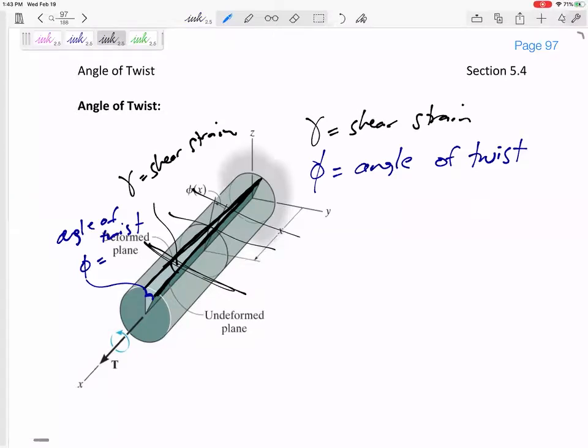So angle of twist is different at each length, whereas the shear strain, in this simple case of one torque, the shear strain would just be one angle right there. Now, as opposed to if this was a smaller diameter, then the angle of twist would be the same, but the shear strain would be different.